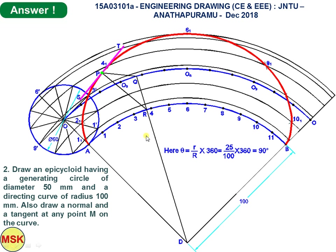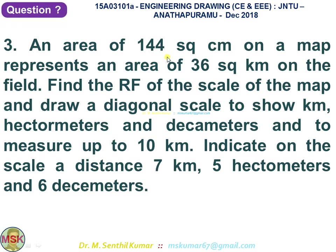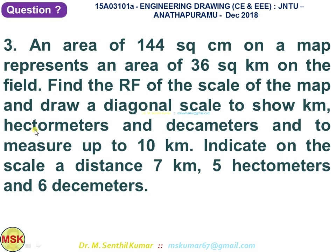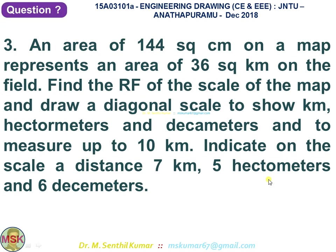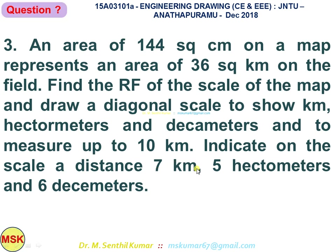Now the third question: an area of 144 square centimeters on a map represents an area of 36 square kilometers on the field. Find the RF of the scale and draw a diagonal scale to show kilometers, hectometers, meters, and decameters, measuring up to 10 kilometers. Indicate on the scale a distance of 7 kilometers, 5 hectometers, and 6 decameters.